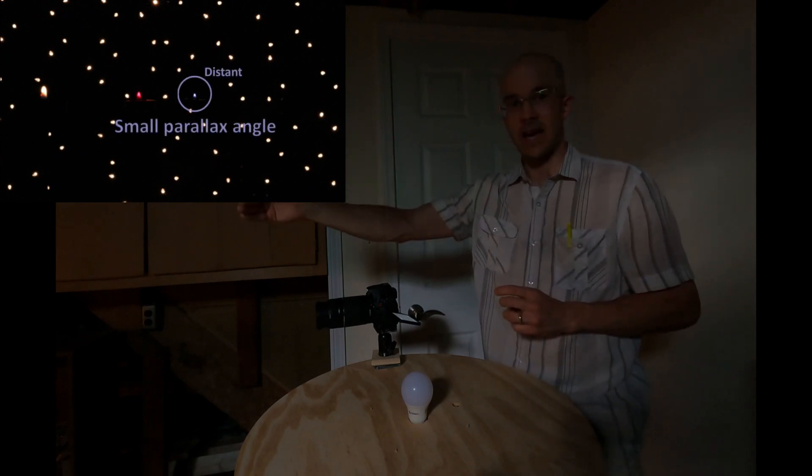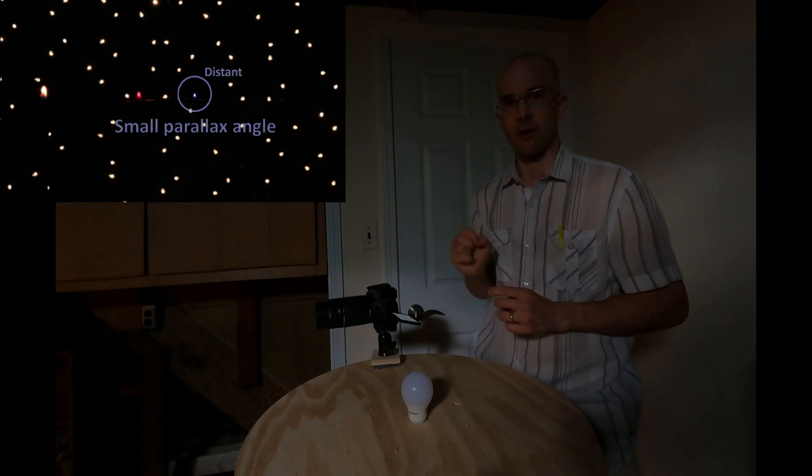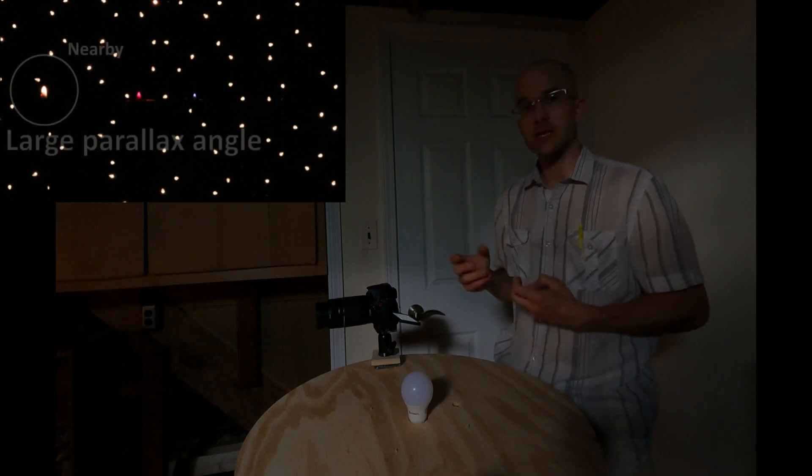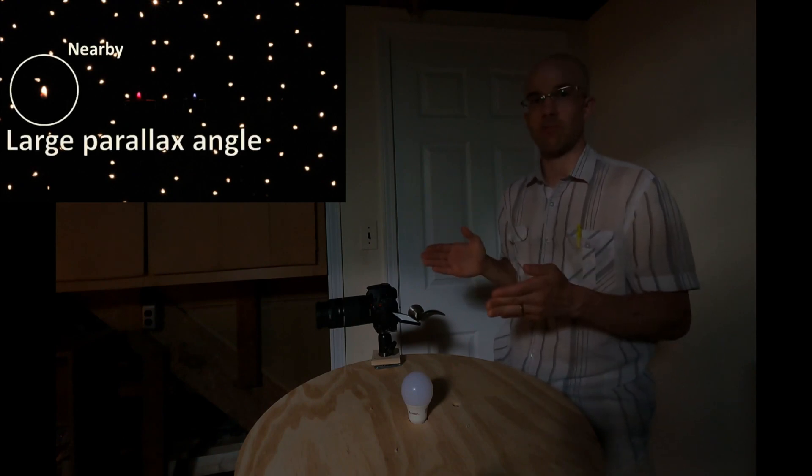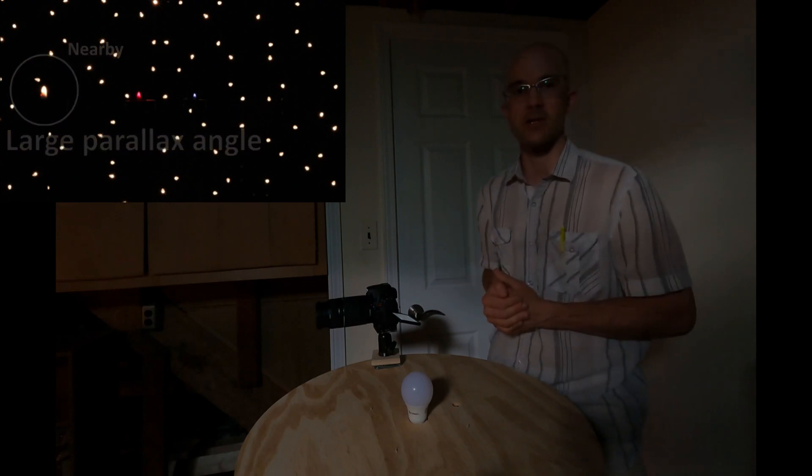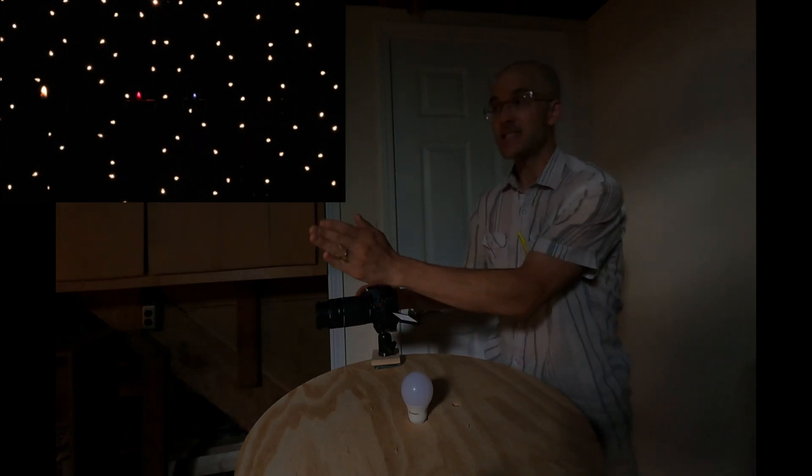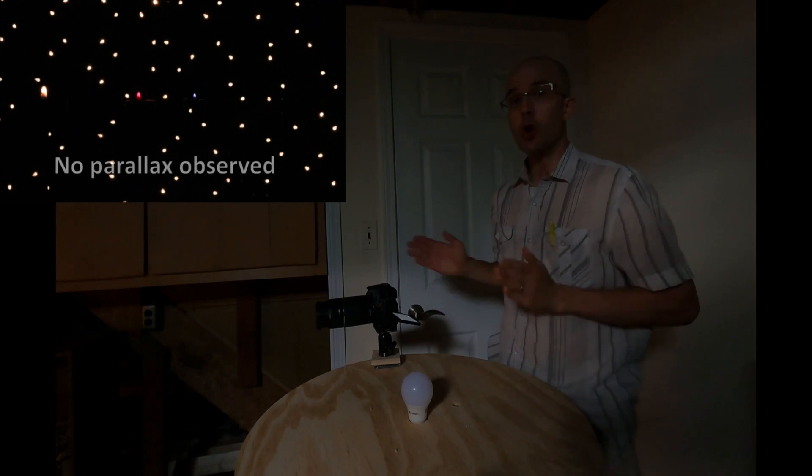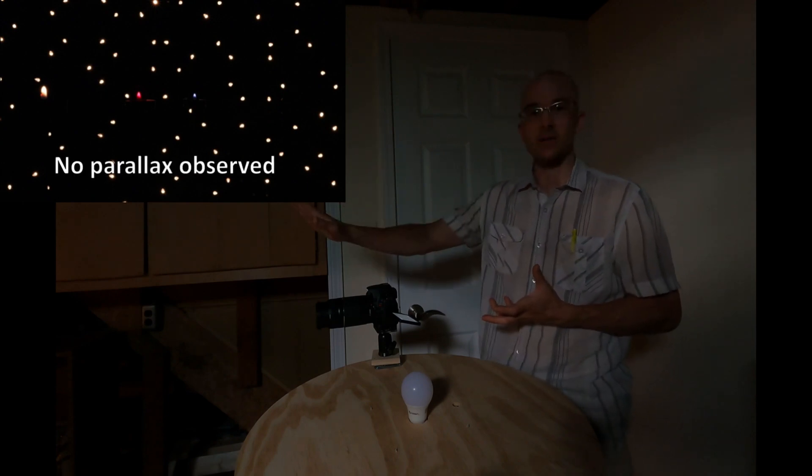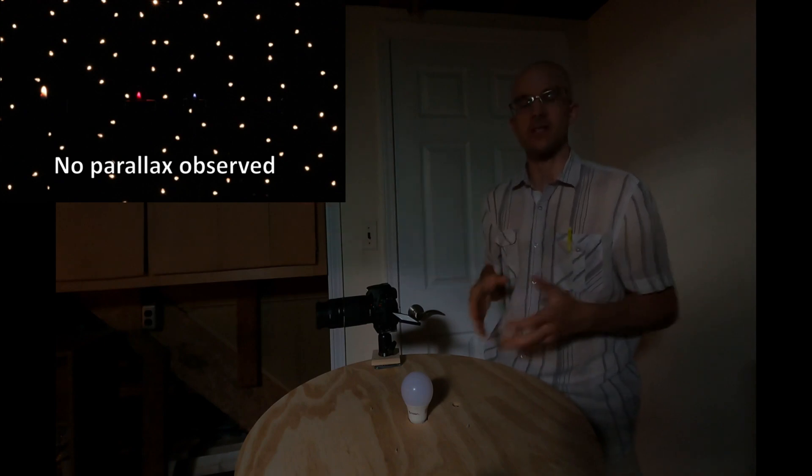We observe parallax in our colored stars, the candles, because they're closer to us. The most distant candle shows a small amount of parallax. The middle candle shows a little bit more parallax, and the very closest candle shows the largest degree of parallax. It appears to swing back and forth a lot against those background stars. In those extremely distant background stars, we observe no parallax. We would say that the parallax angle of those distant stars is too small to measure. It's effectively zero.